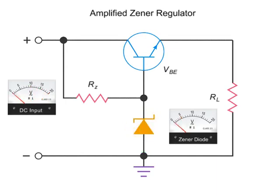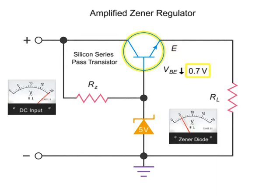In this demonstration, we'll put 20 volts and use a Zener diode with a value of 5 volts. The regulator circuitry also contains a silicon series PASS transistor. Remember that in a transistor, the voltage value at the emitter is always 0.7 less than the voltage at the base.